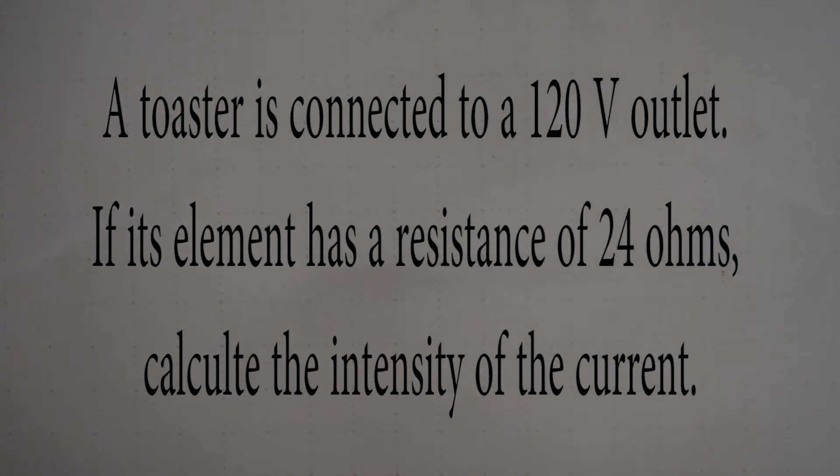Our next question asks us: the toaster is connected to a 120 volt outlet. If its element has a resistance of 24 ohms, calculate the intensity of the current.